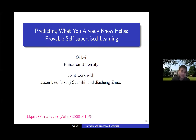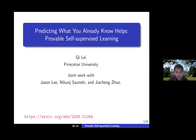Hello everyone. Today we're very lucky to have Chi Lei. She's a postdoc at Princeton University, advised by Jason, and she got her PhD from UT Austin this past May. She visited IAS last year and also visited Simons Institute for the Foundation of Deep Learning program last summer. Her main research interests are machine learning, deep learning, and optimization. She has received several awards, including two years of the Computing Innovation Fellowship and the Simons Berkeley Research Fellowship. Today she'll talk about self-supervised learning.